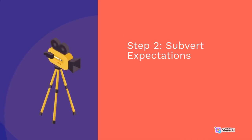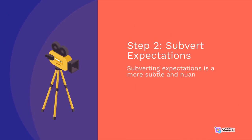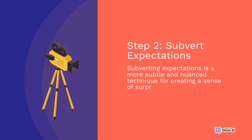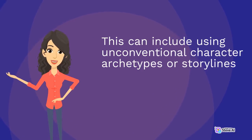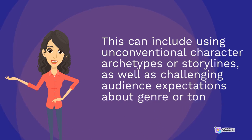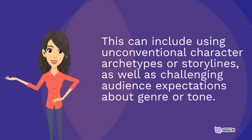Step 2 – Subvert Expectations. Subverting expectations is a more subtle and nuanced technique for creating a sense of surprise and unexpectedness in a film. This can include using unconventional character archetypes or storylines, as well as challenging audience expectations about genre or tone.